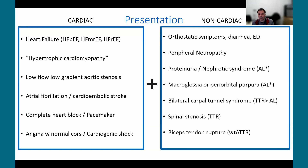Non-cardiac clues can be very helpful. Symptoms of neuropathy — either autonomic neuropathy such as orthostatic hypotension, diarrhea, and erectile dysfunction, or peripheral neuropathy — are important findings. Proteinuria and nephrotic syndrome are classically seen in AL amyloidosis, and macroglossia and periorbital purpura are almost always AL. Bilateral carpal tunnel syndrome, spinal stenosis, and biceps tendon rupture are mostly, if not exclusively, found in TTR.